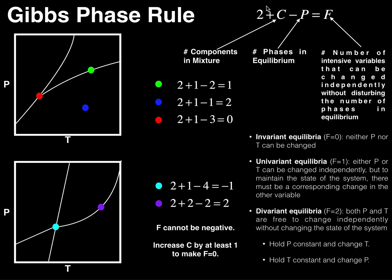When you add 2 plus C minus P together, you get F. F is the number of intensive variables that can be changed independently without disturbing the number of phases in equilibrium — essentially pressure and temperature. There are three cases. When F equals zero, this is called invariant equilibria: neither P nor T can be changed. If you changed either one, you'd change the number of phases in equilibrium.